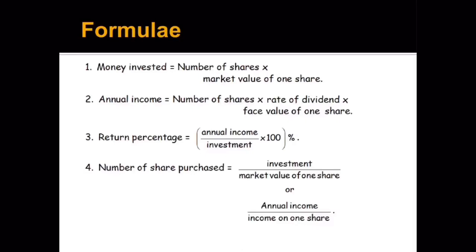Next is return percentage — it is simply annual income upon the investment into 100. Return percentage into market value is equal to rate of dividend into face value. Return percentage is always calculated on the market value, and rate of dividend is always calculated on the face value, and the answer you get by calculating is always equal. For number of shares purchased, it simply becomes total money invested divided by the market value of one share.